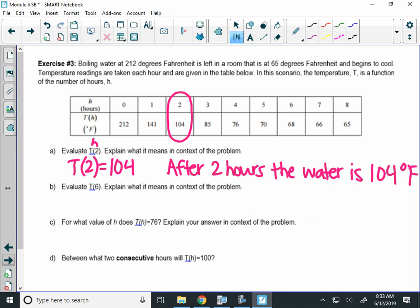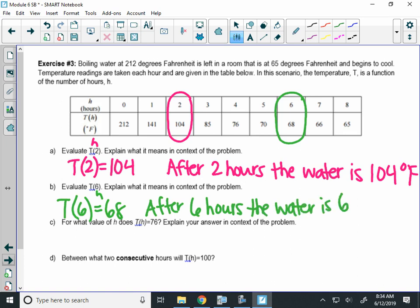We're going to do the same thing for part B. It says what's T of 6? Well, 6 is also the hours. I'm going to go to where my hours are 6, I get a temperature of 68. So, a similar sentence would be after 6 hours, the water is 68 degrees Fahrenheit.